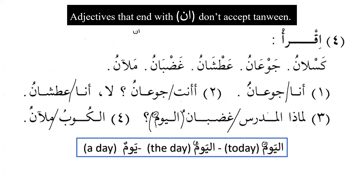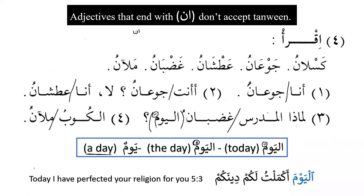An important distinction: 'al-yawma' with fatha means 'today'; 'al-yawmu' with dhamma means 'the day'; and 'yawmun' without al means 'a day.' For example from the Quran: 'Al-yawma akmaltu lakum dinakum' — 'Today I have perfected your religion for you' — so al-yawma here means today. Al-yawmu means that day, and yawmun means a day. This is extra information worth noting so you are not confused when you encounter it.